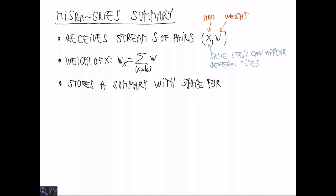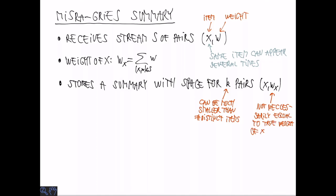The Misra-Gries summary consists of K pairs where K is a parameter that you can set. Each X is associated with a weight W which is supposed to be an approximation of the true weight. Since we are not able to store all pairs, the weight that we store is not necessarily equal to the true weight of X in S. To distinguish these two, we denote the true weight by W_X star.